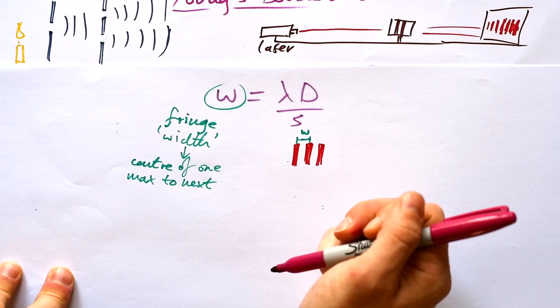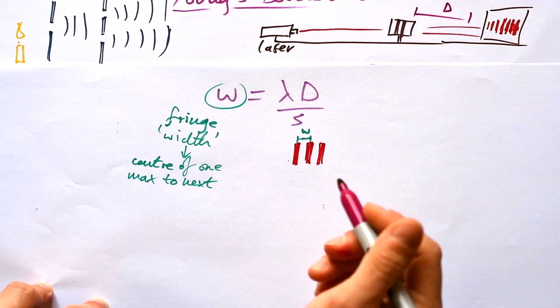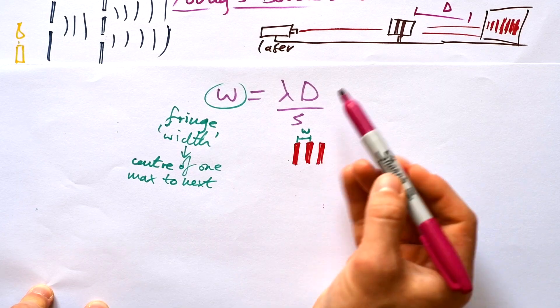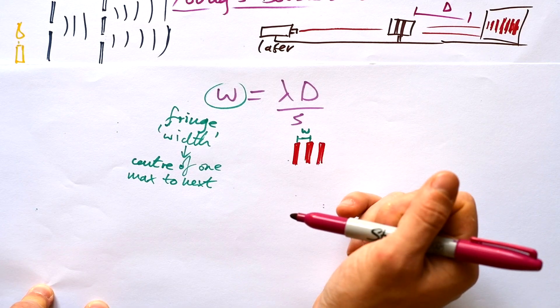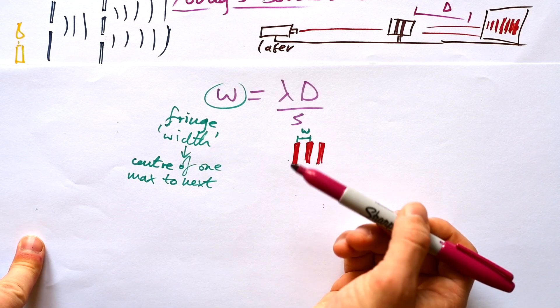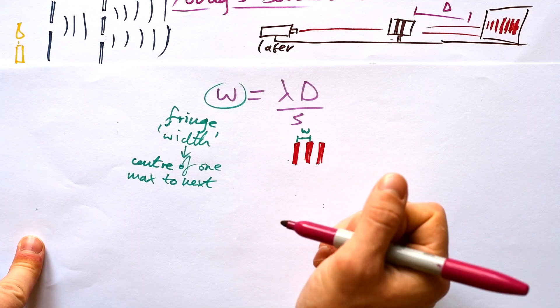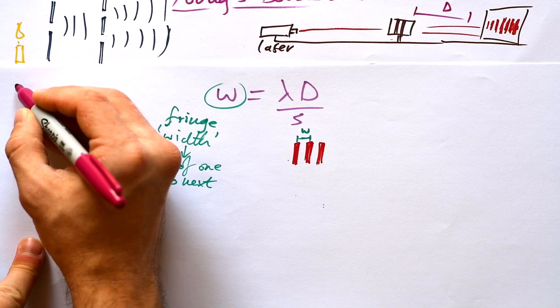But we're probably not going to do that we're probably going to change either D that's our screen distance there or it's going to be our slit separation and so we're going to change our slide out for something else. It really is up to you which one you do but if you don't have lots of slit separations if you don't have lots of these slides then you're probably going to be changing D instead. Let's go with change D first.